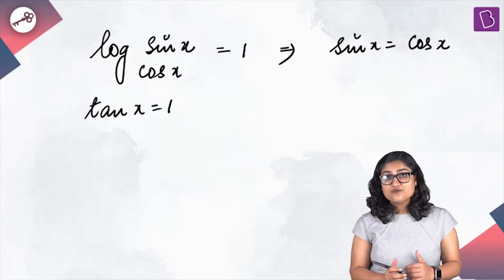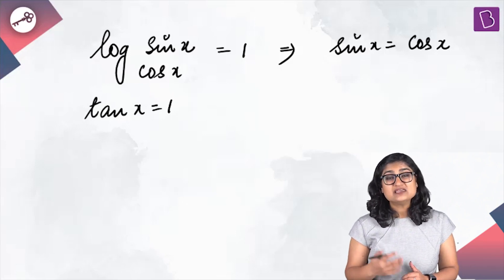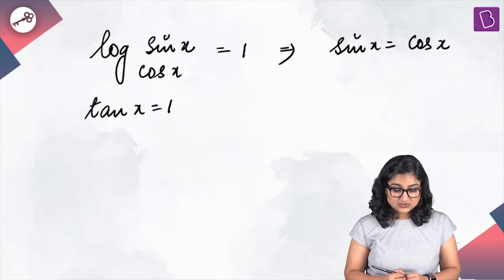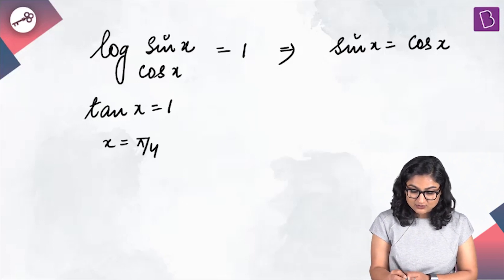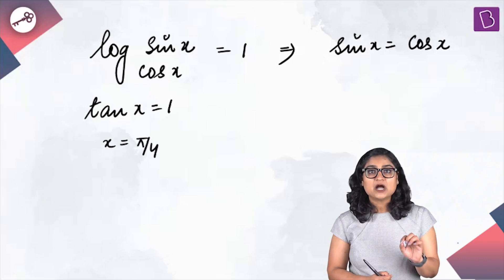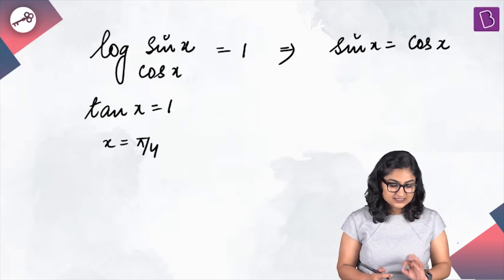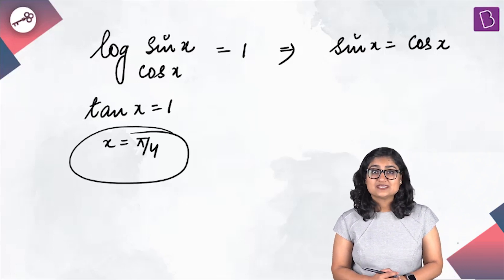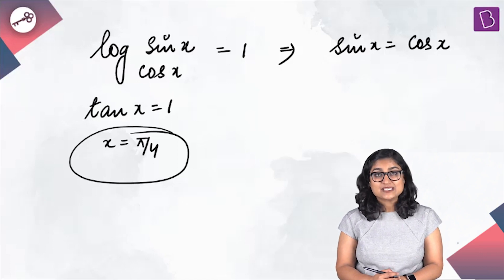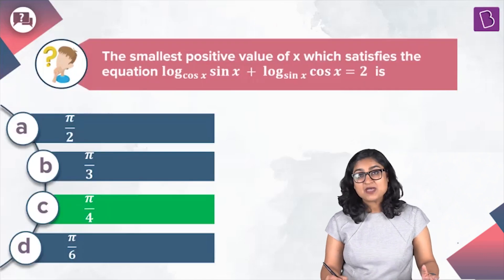The smallest positive value of x satisfying tan(x) = 1 is x = π/4. This is our final answer, which matches option C.